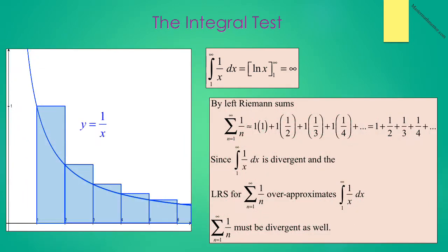Now let's examine the sum from n equals 1 to infinity of 1 over n from a geometric point of view. By left Riemann sums with base 1, we get 1 over 1 plus 1 over 2 plus 1 over 3 plus 1 over 4, which is 1 plus a half plus a third plus a fourth. Since the integral from 1 to infinity of 1 over x is divergent, and the left-hand Riemann sum over-approximates the integral, then the sum from n equals 1 to infinity of 1 over n must be divergent as well.